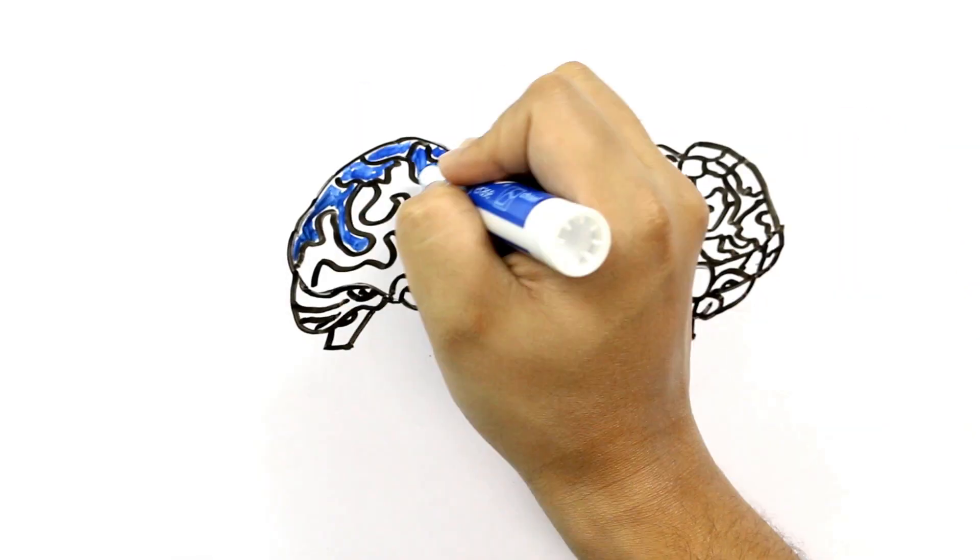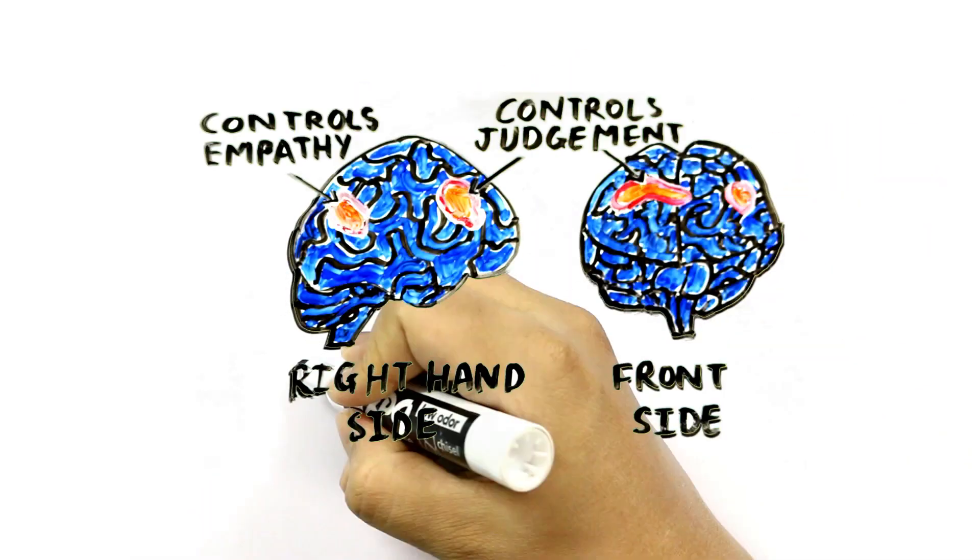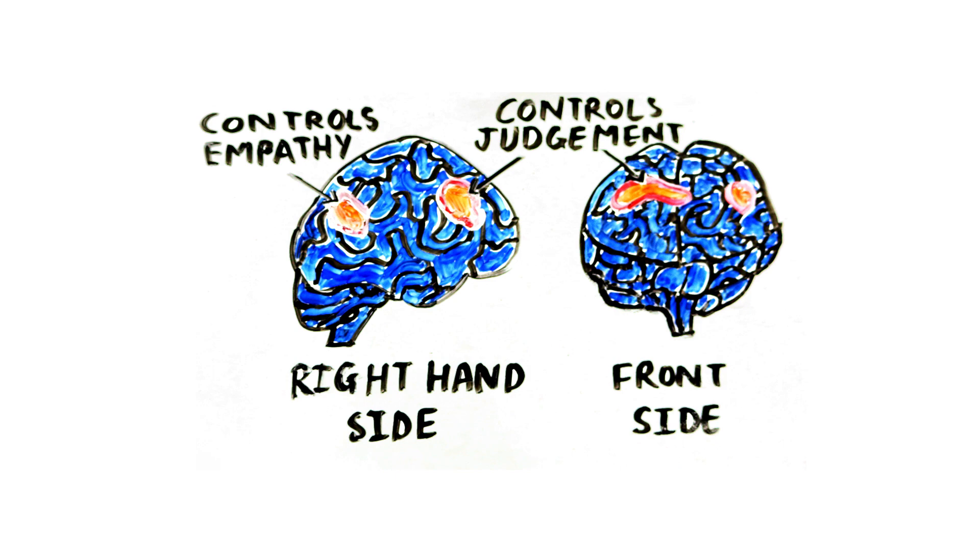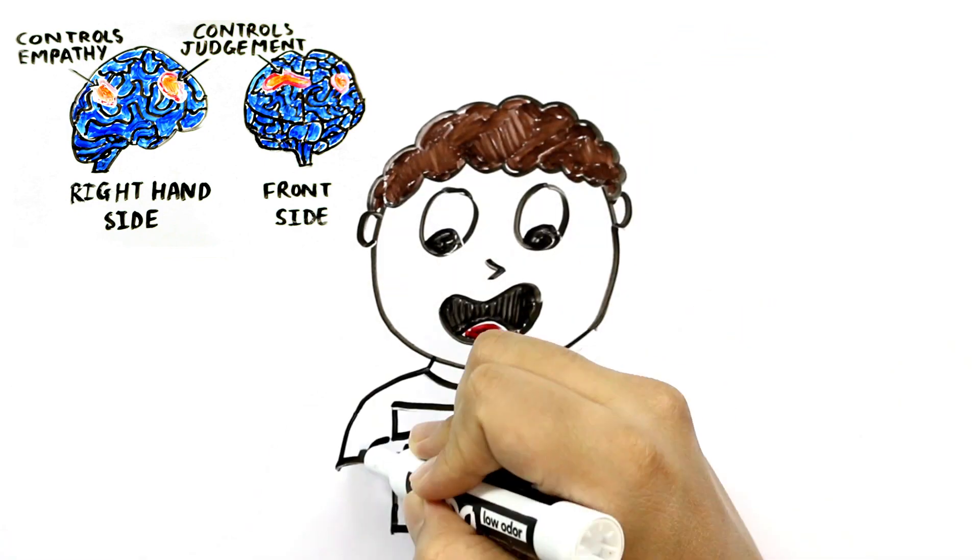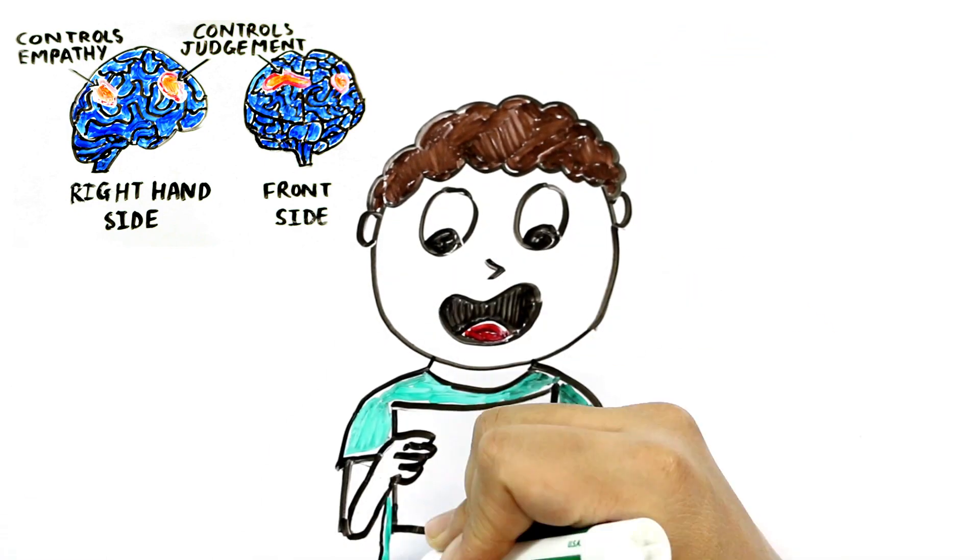Here comes the really interesting part. The frontal cortex, vital to judgment, shuts down when we fall in love. MRI scans show this deactivation occurs only when someone is shown a photo of the person they adore, causing them to suspend all criticism or doubt.